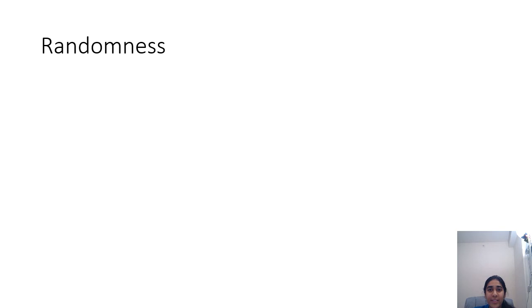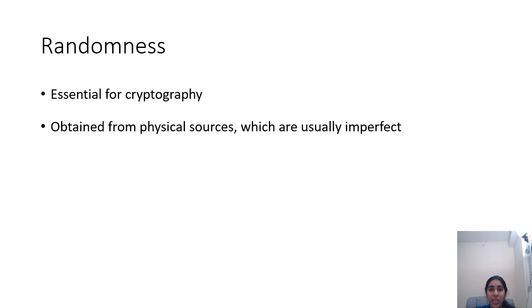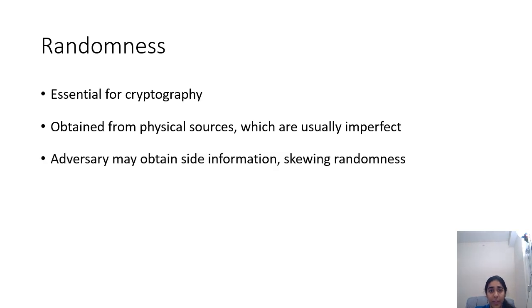In cryptography, we nearly always need access to perfect sources of randomness. But such perfect randomness is really hard to come by in practice. Typically, randomness is derived from physical sources, which may be imperfect. Or sometimes the adversary may be obtaining partial side information about the secret randomness used by honest players and thereby skewing this randomness.